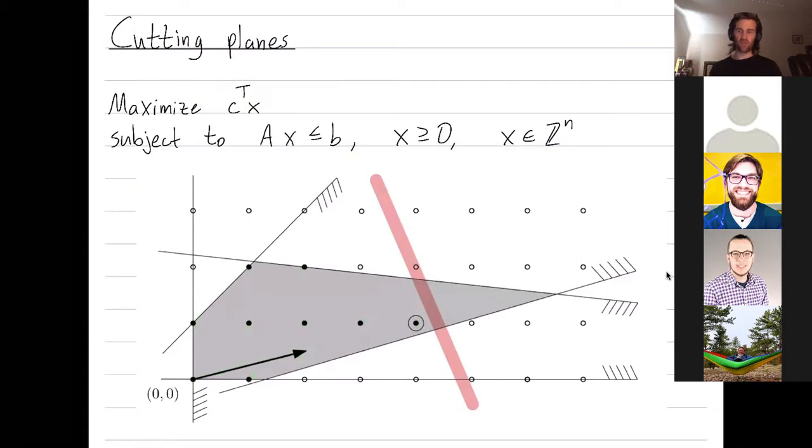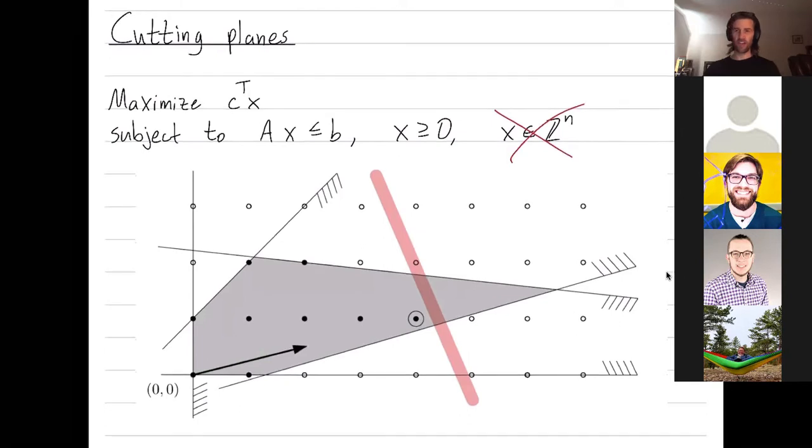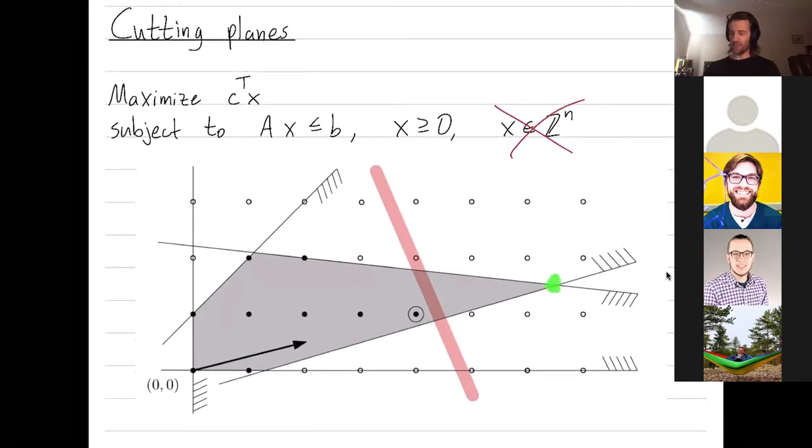So a common thing to do is forget about the integrality constraint and just solve your linear program, and you'll find this optimum right here. Which is sort of close to the optimal integer solution, but not really. It seems like you could do better.